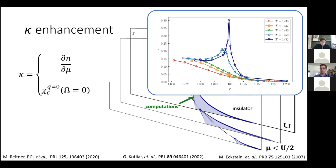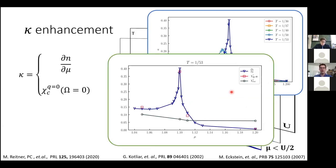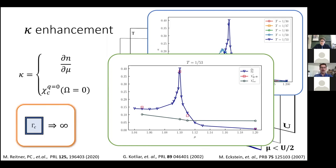Going to the two-particle perspective, we expect the same result. We perform the calculation for a temperature close to the critical endpoint, and the red squares from our two-particle calculation nicely follow this behavior of kappa. So far so good — this was just to give a feeling for the compressibility in the system.